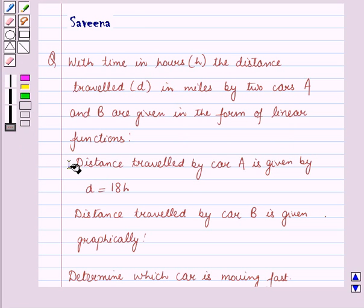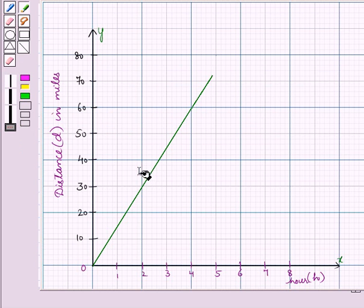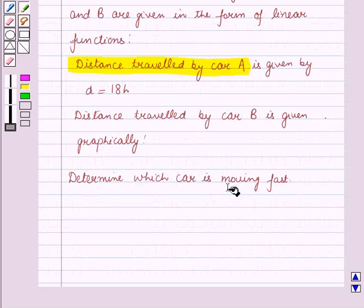Distance travelled by car A is given by d equals 18h and distance travelled by car B is given graphically. Determine which car is moving fast.